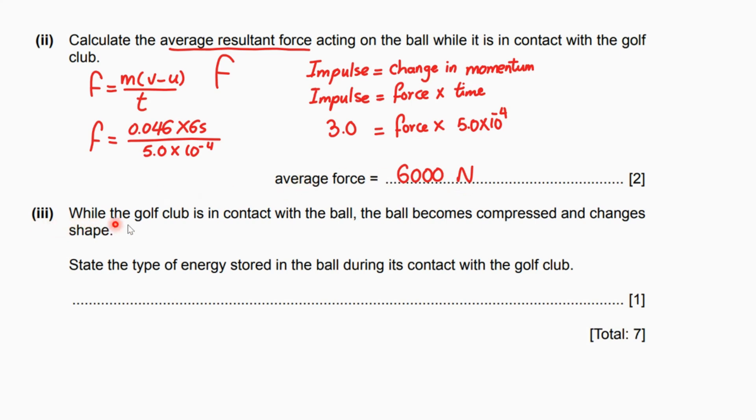Finally, part iii. While the golf club is in contact with the ball, the ball becomes compressed and changes shape. State the type of energy stored in the ball during its contact with the golf club. At this moment, there is a change in shape, or it's deformed. There's only one type of energy stored inside, or you could say it's a kind of potential energy. This type of energy is called elastic energy or strain energy.